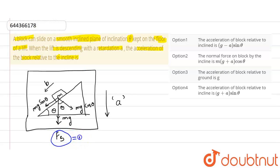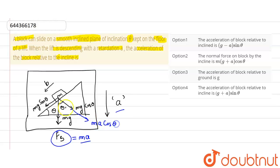Let Fs equal mass times acceleration a, because this is the retardation force — so pseudo force equals m times a. The component of pseudo force along the incline will be ma cos theta, and the component perpendicular to the incline will be ma sin theta.